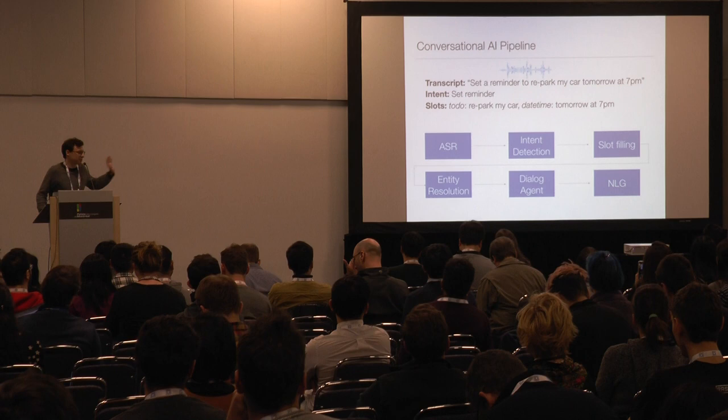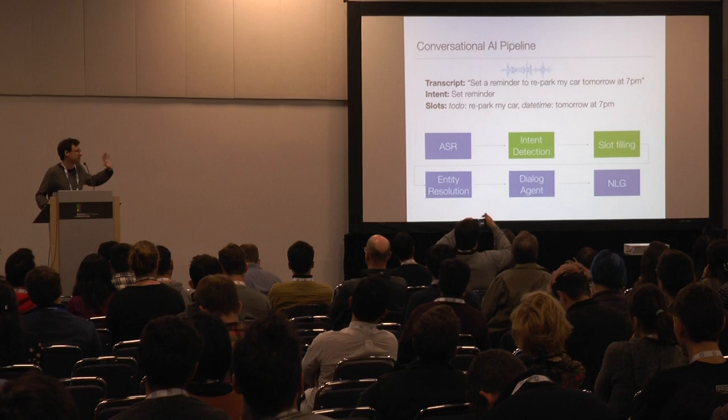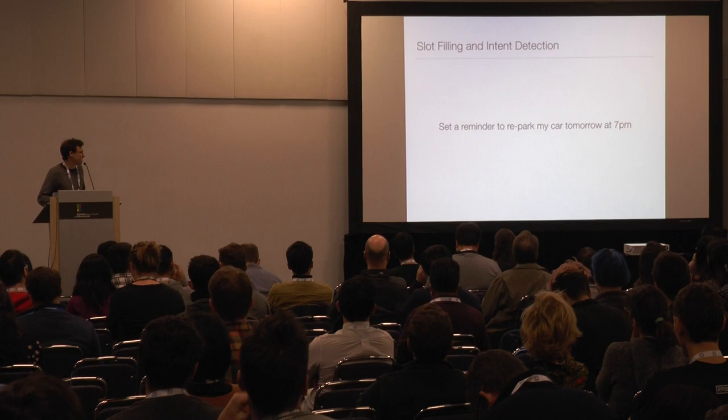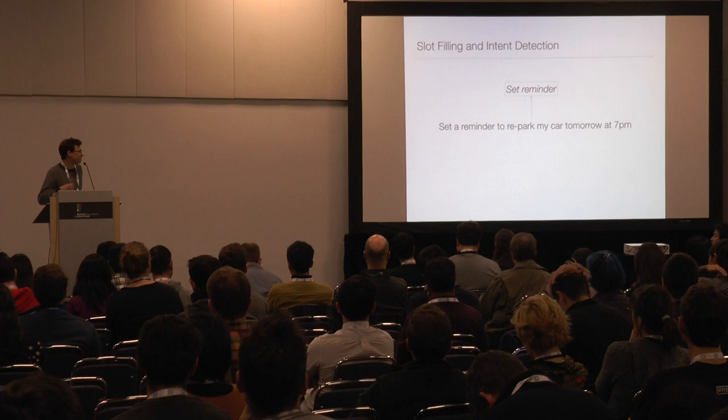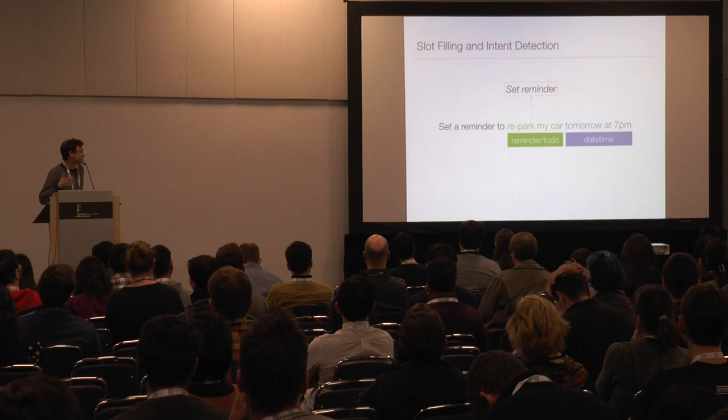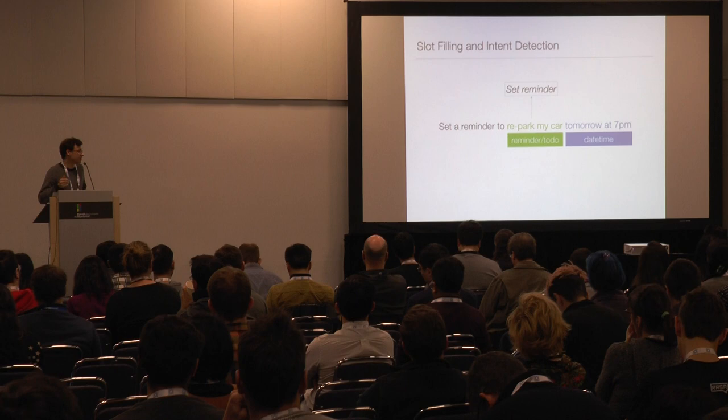There are usually a bunch of more things, but in this talk we're going to focus on two components: intent detection and slot filling. Assuming we have a command like this one, the task of intent detection is just a sentence classification task. So in this case, the classifier would ideally figure out that this is a set reminder intent.